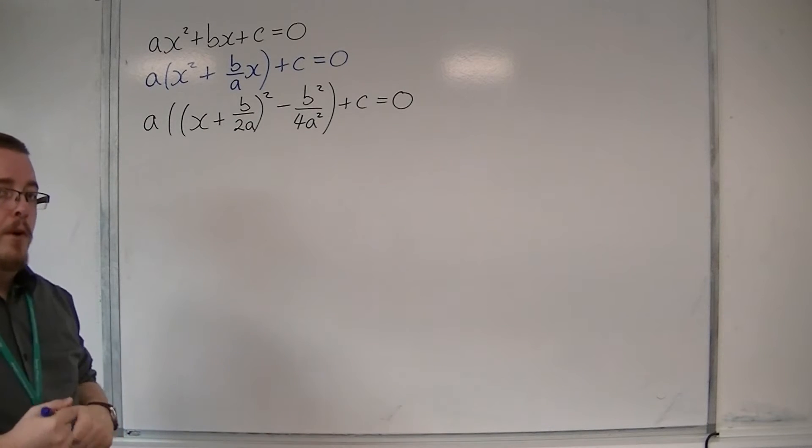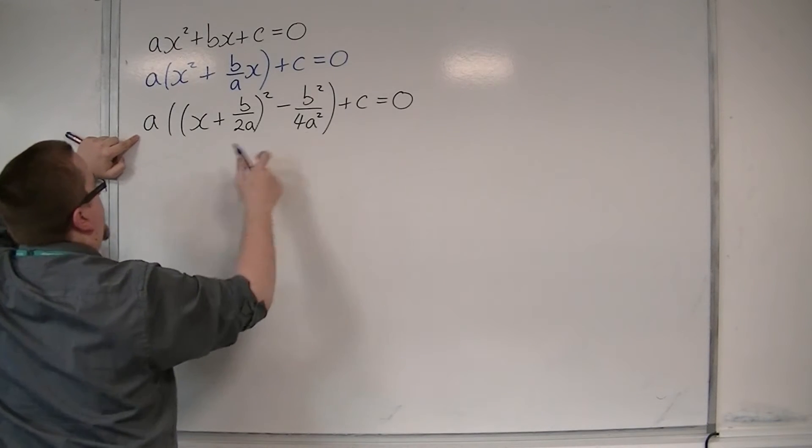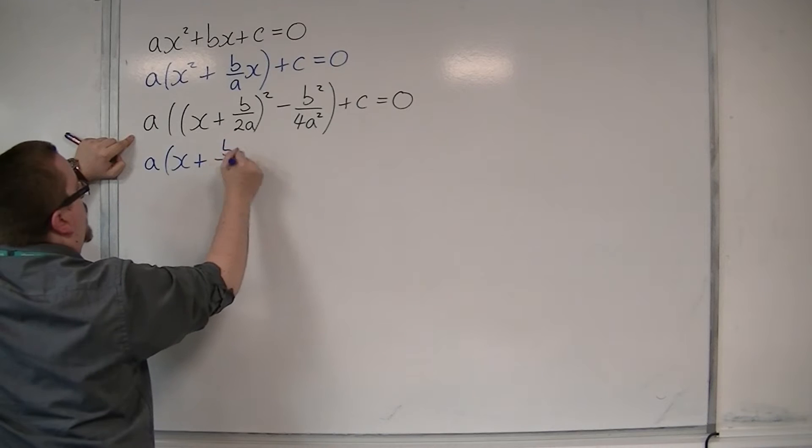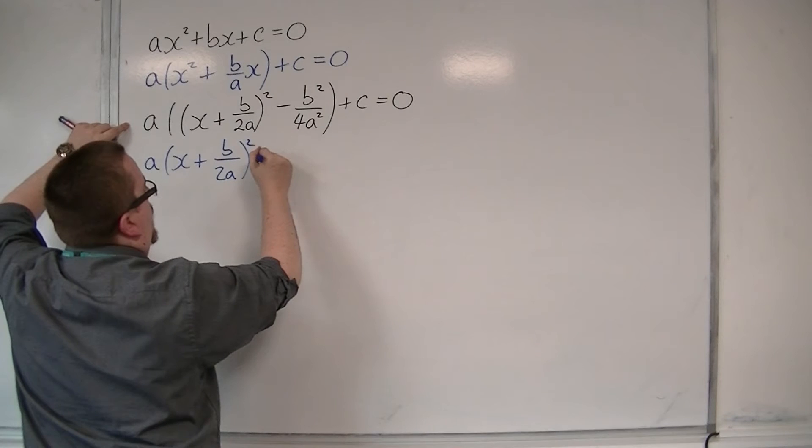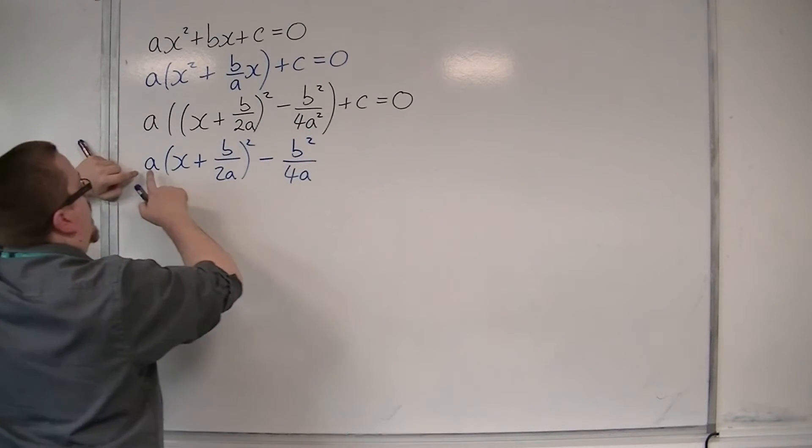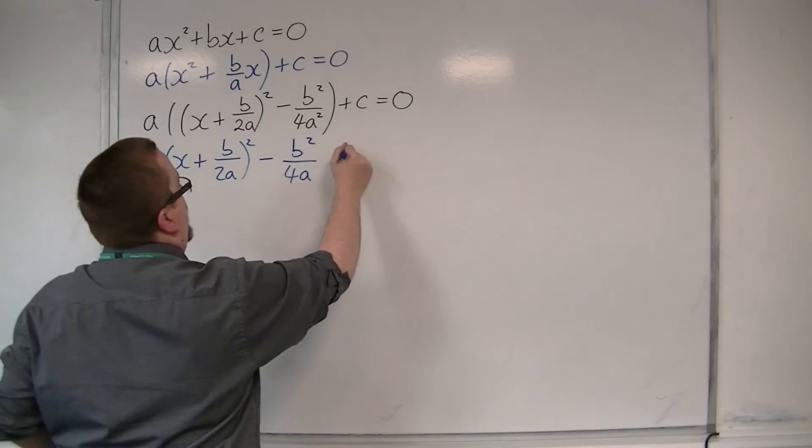We now want to multiply through by the a for these two terms. We're going to have a times the x plus b over 2a squared. We're going to multiply a by this term as well, so we're going to have minus b squared over 4a. That a will cancel with one of those a's. And we've got that plus c on the end.